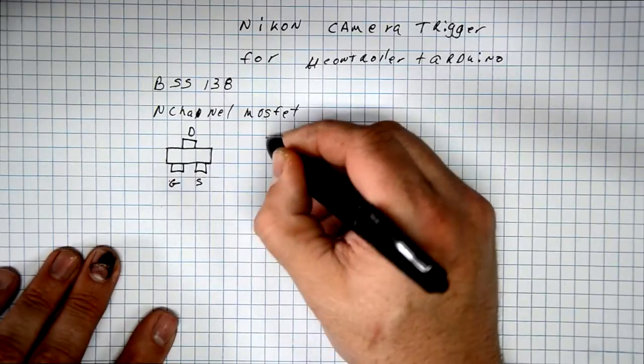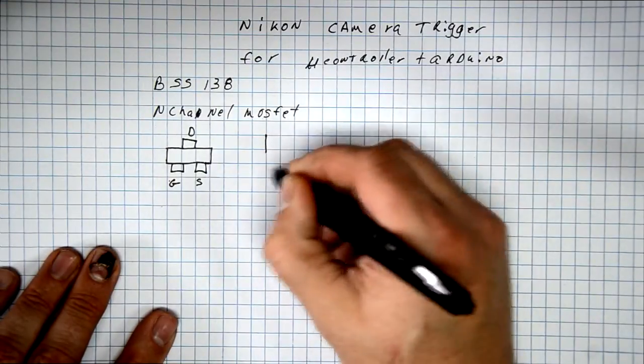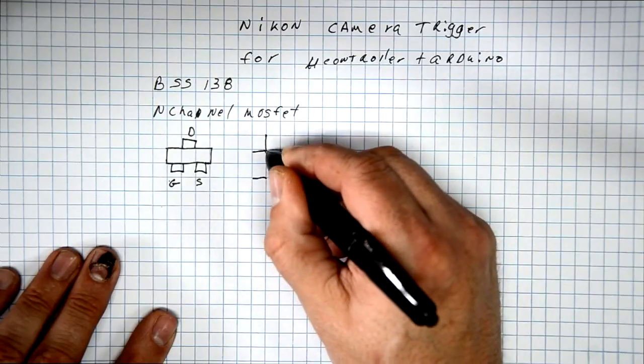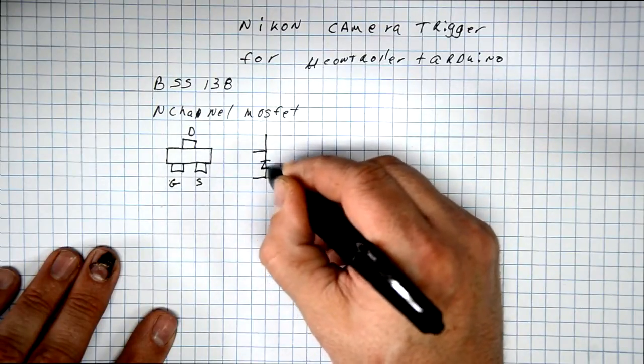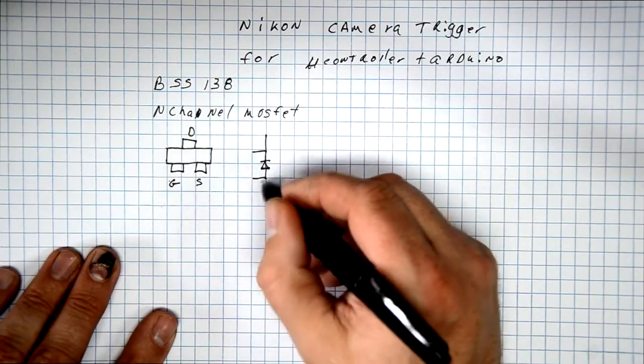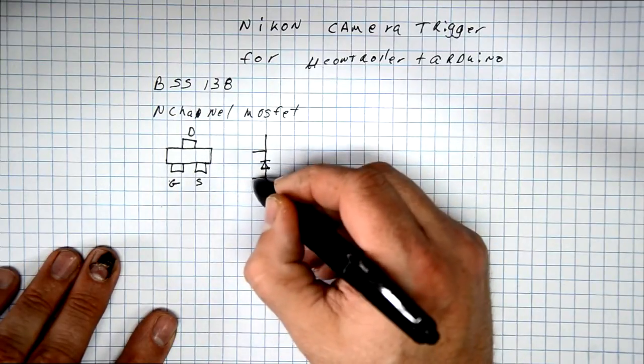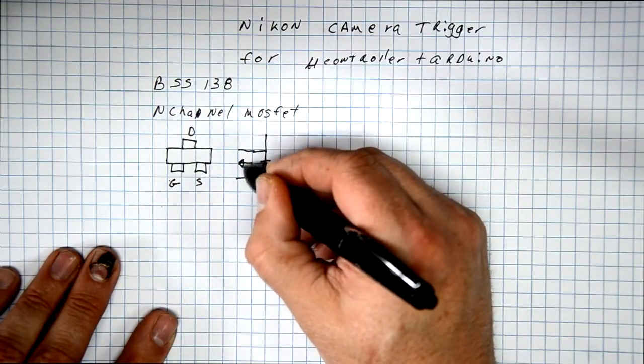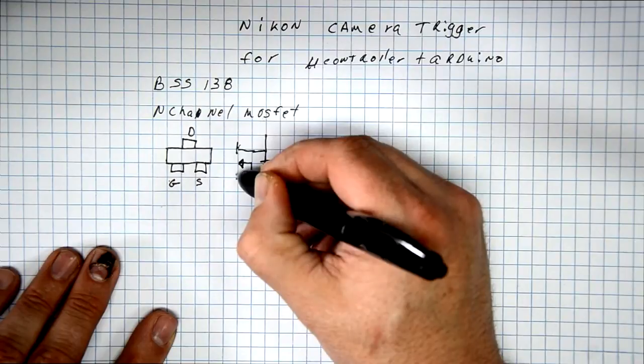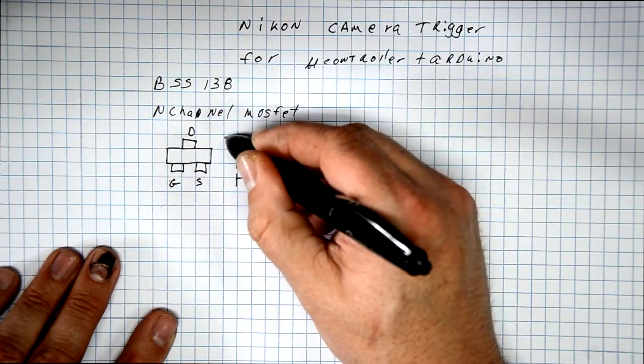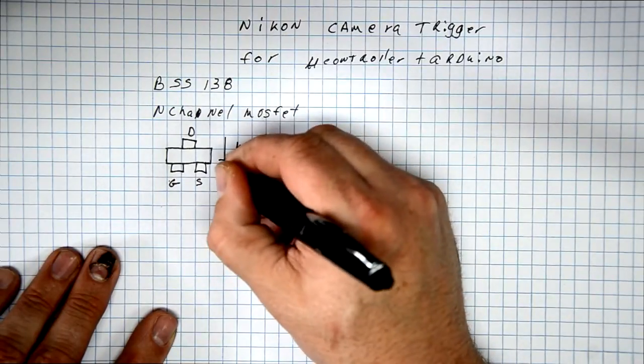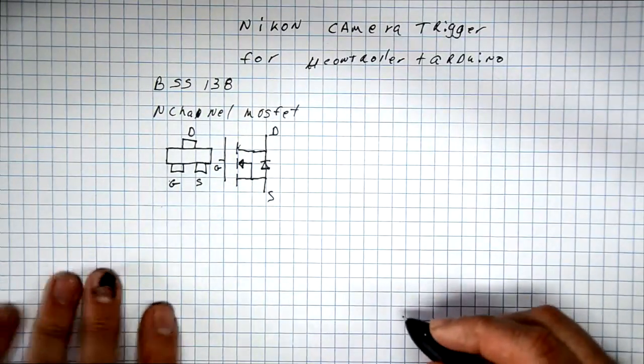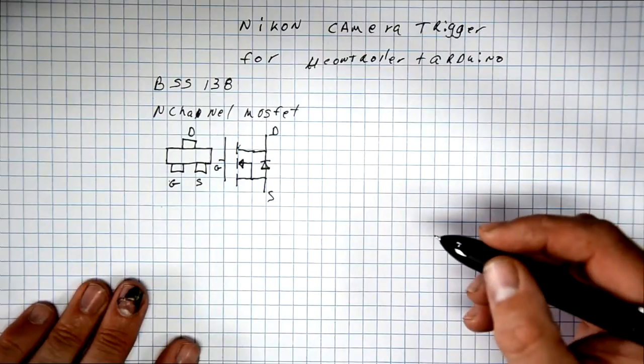It turns out that the Nikon cameras I want to control—I have both a D70 and a D7000—they both use open collector switches. So all we need to do is bring to ground the shutter wire or the focus wire.